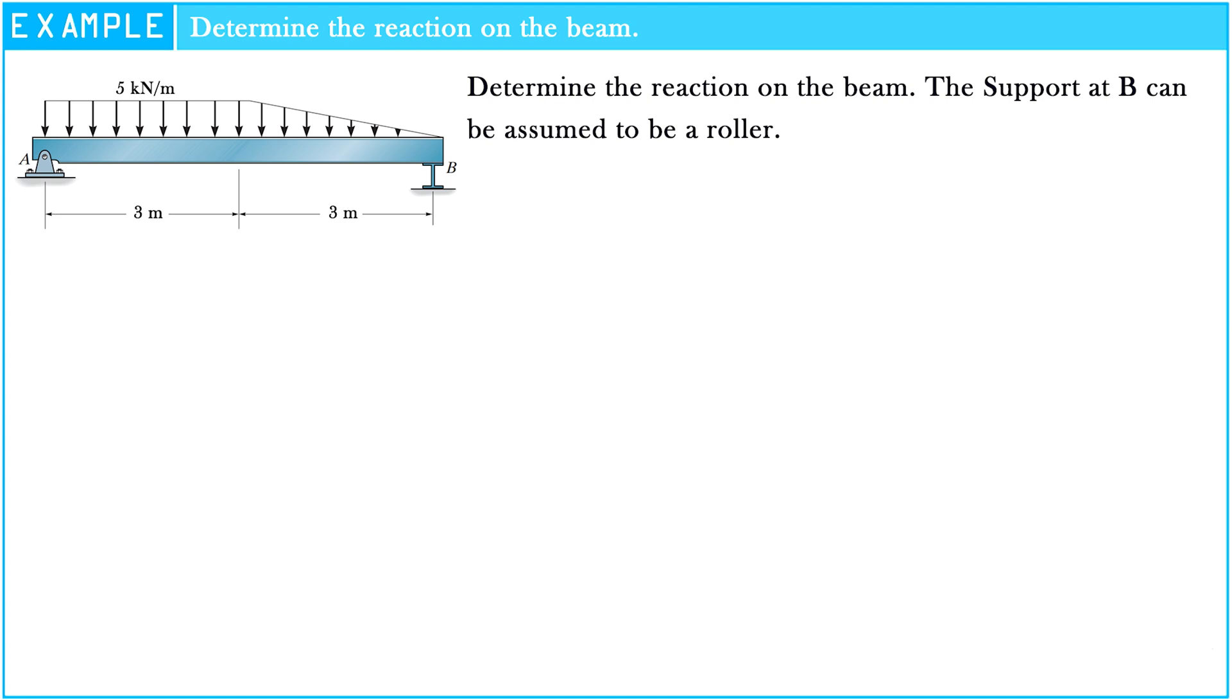Look at the figure of the problem. We see that there is a 6 meters beam which have 5 kN per meter from support A to the middle of the beam, and after from the middle of the beam, 5 kN per meter is decreased to 0 at support B.